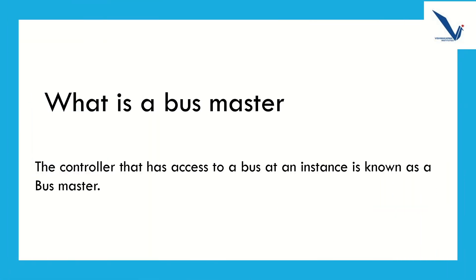The controller that has access to the bus at an instant is known as the bus master. A conflict may arise if a number of DMA controllers, other controllers, or processors try to access the bus at the same time, but access can only be granted to one of those. Only one processor or controller can be bus master at a given point of time. To resolve these conflicts, the bus arbitration procedure is implemented to coordinate the activities of all devices requesting memory transfer. There are two approaches to bus arbitration: centralized bus arbitration, where a single bus arbiter performs the required arbitration, and distributed bus arbitration, where all devices participate in the selection of the next bus master.